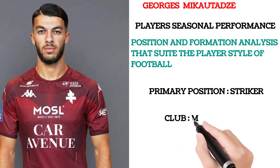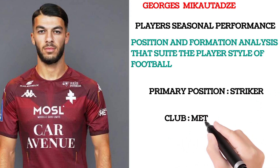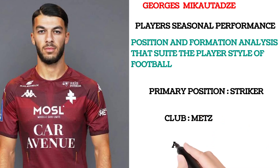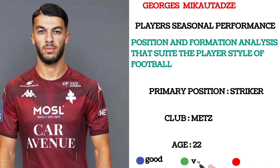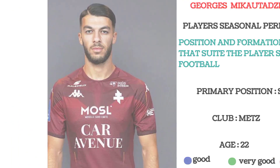The club he plays in is Mets. He is 22 years of age. The blue, green, and red color coding are for his performance: blue means good performance, green is very good, while red is excellent.